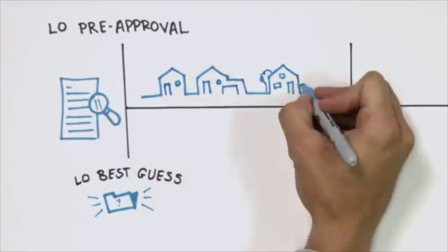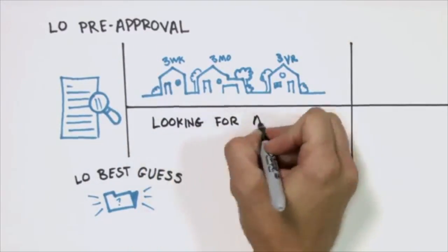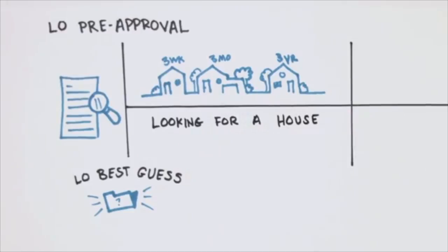So now the poor realtor is out for three weeks, three months, three years, however long it takes, looking for a house for the client based on the loan officer's best guess.